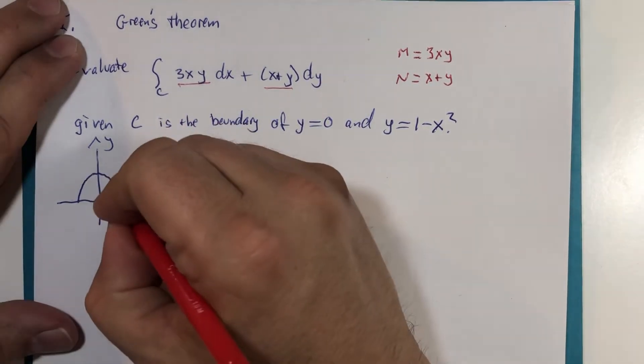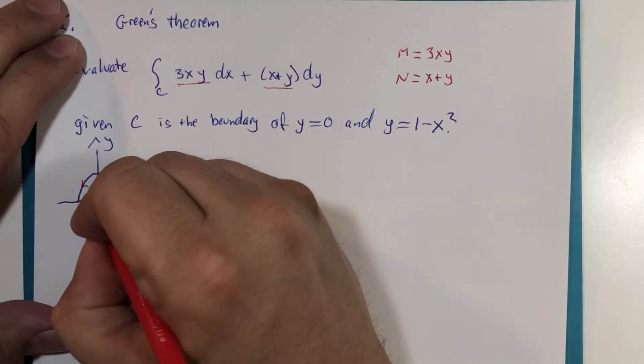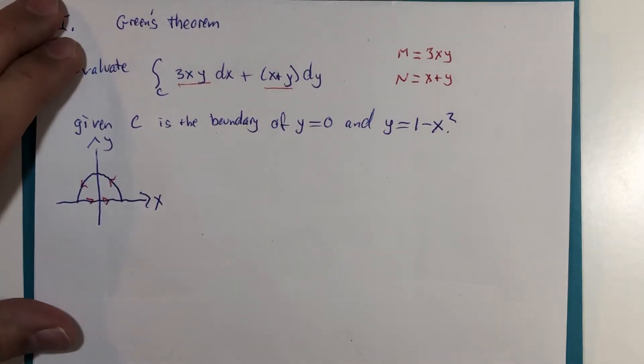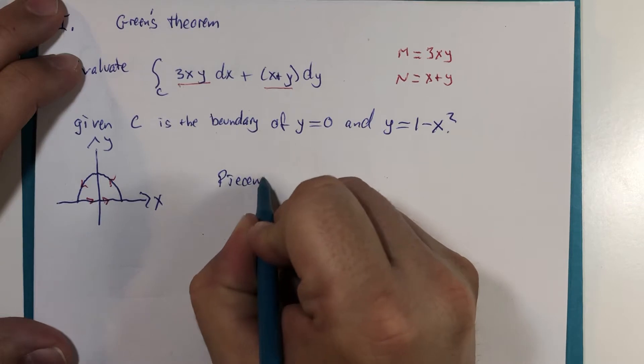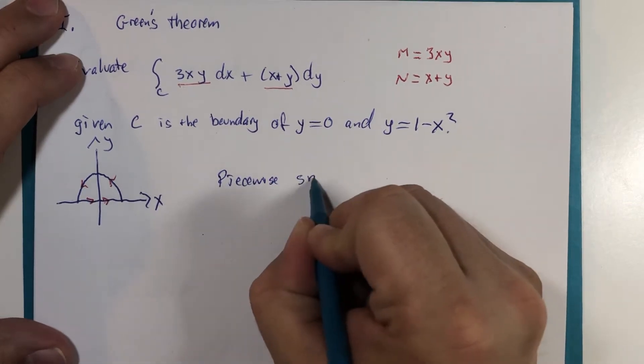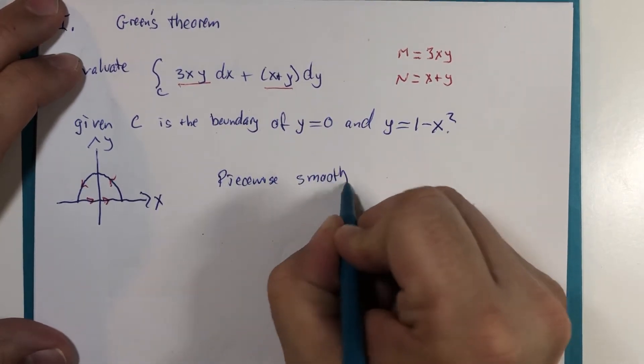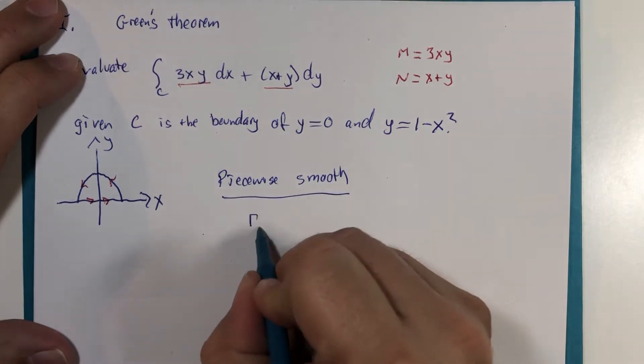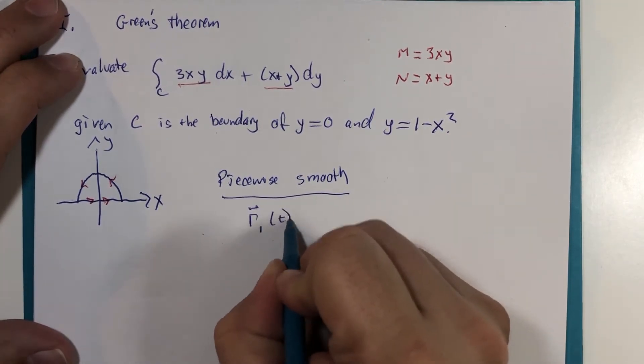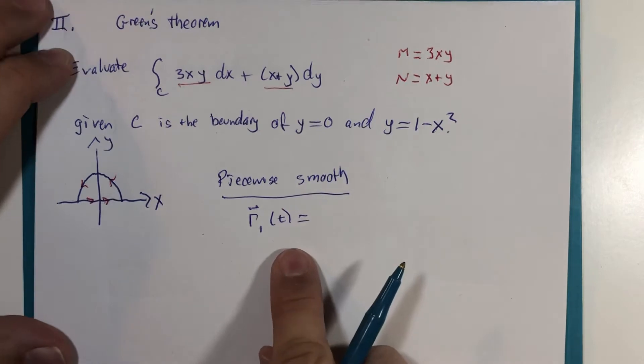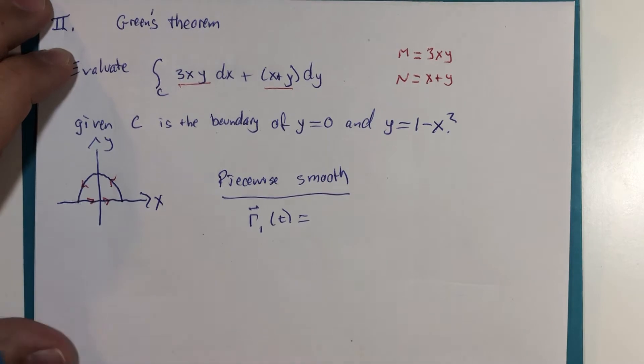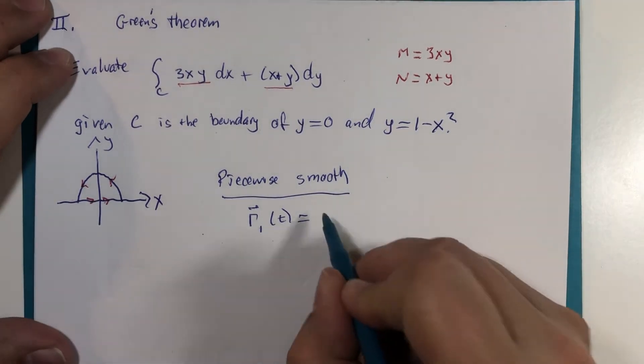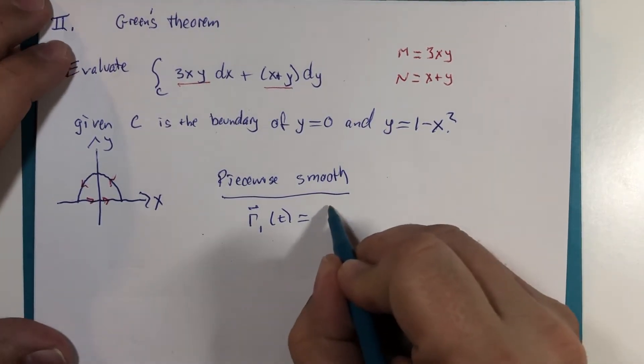And we were to trace it in the counterclockwise direction, and we were to use a regular line integral. We would call this piecewise smooth. And we would have to calculate r1 of t, or set up r1 of t, to represent the upper half of this parabola piece.